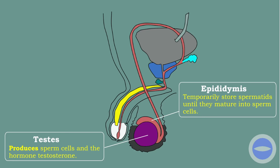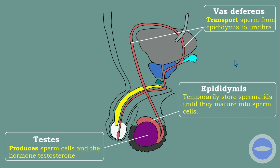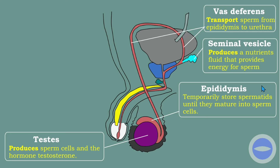Another part we will discuss is the vas deferens. The function of the vas deferens is to transport sperm from the epididymis to the urethra. You can see this vas deferens on the diagram — it transports sperm from the epididymis to the urethra.